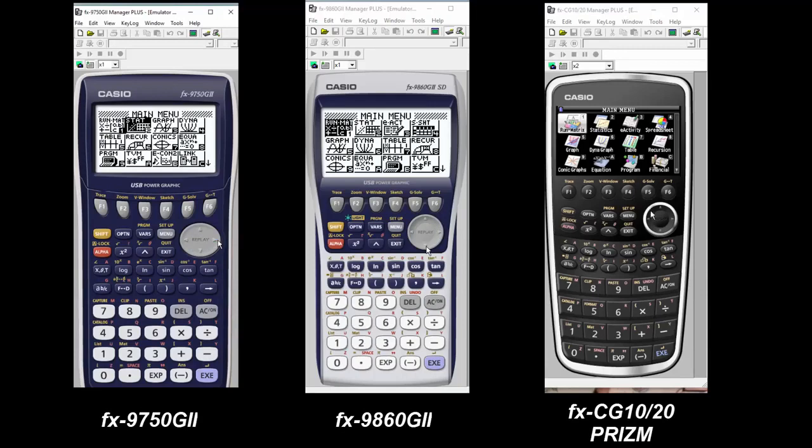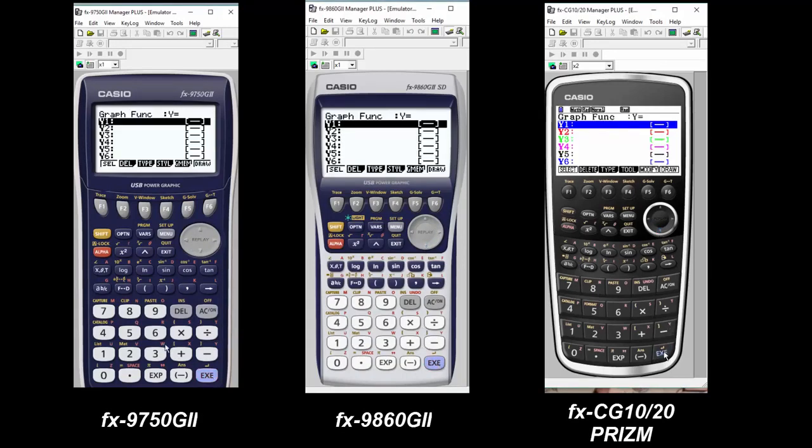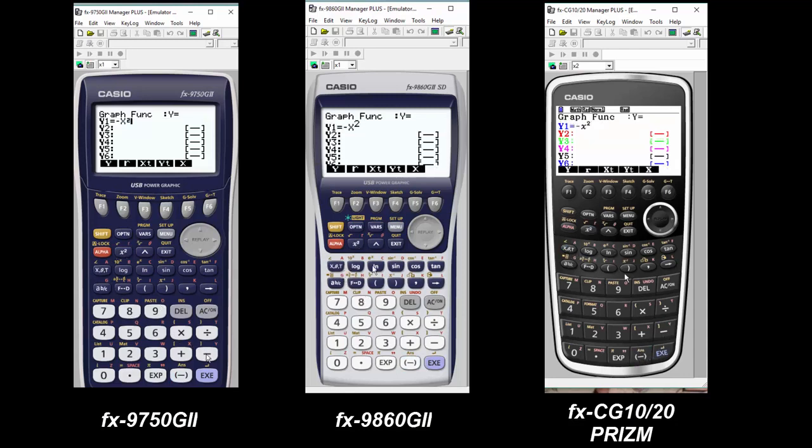So the first thing you do is from the menu go into graph, no matter which calculator you're on, so you can get there. And you're going to enter your function, first of all, and simply you'll notice that all calculators, the buttons are sort of in the exact same place.